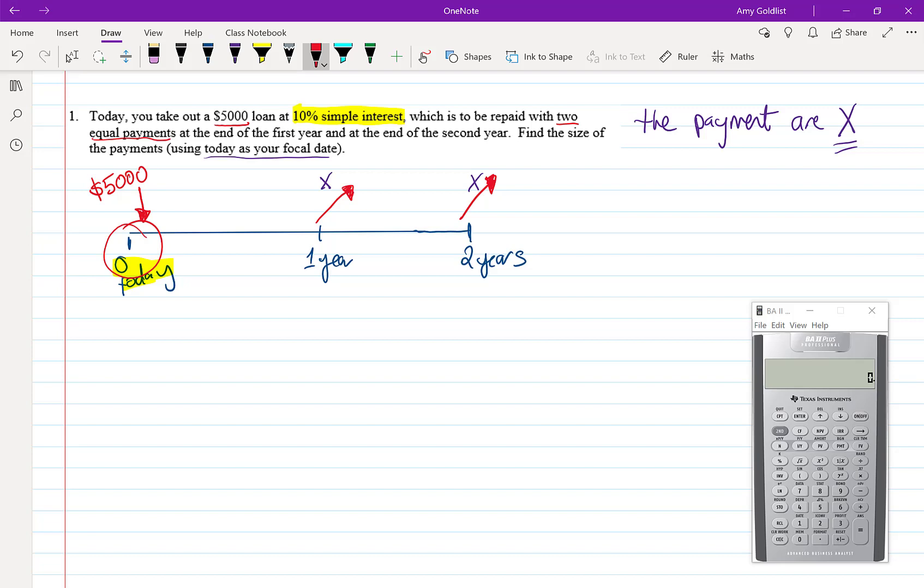After all, $5,000 coming into my account means the person who loaned me the money had $5,000 leave their account, and the payments will come to them as income. Every question has both people and it can be done either way.